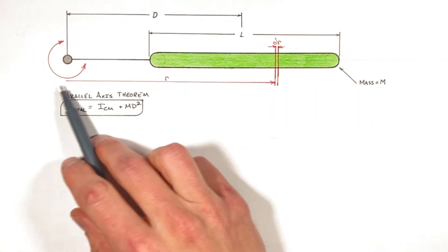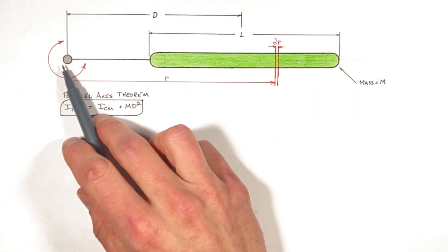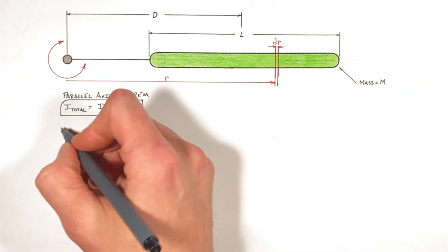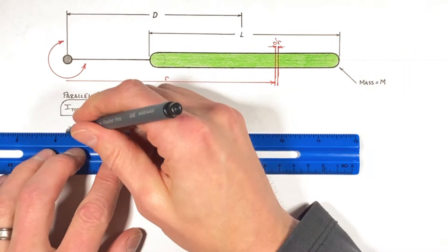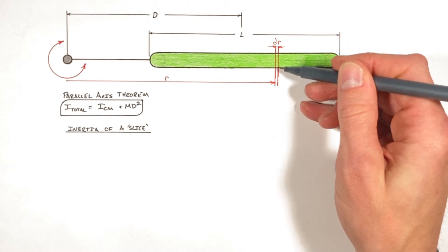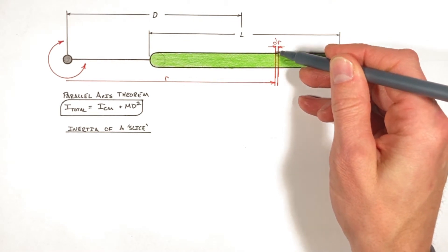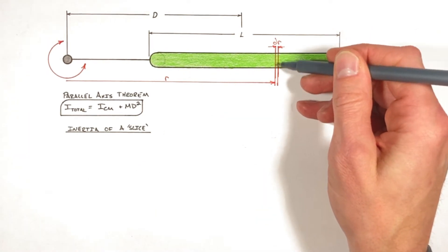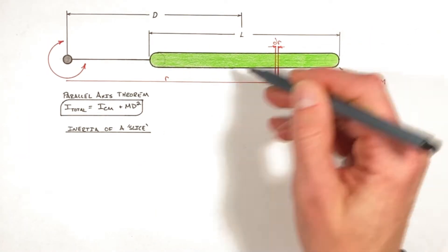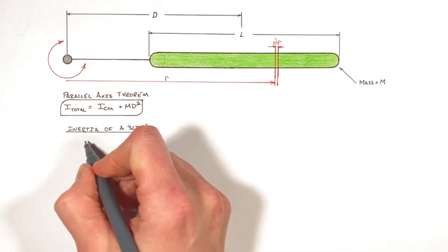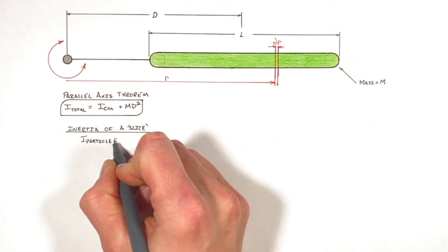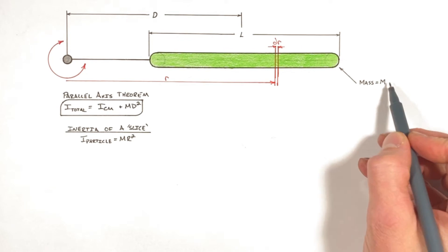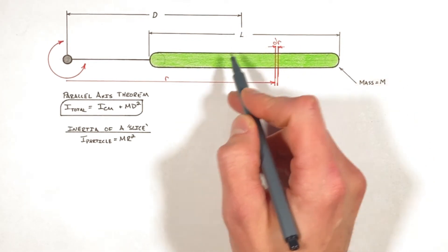In order to find the inertia of this rod rotating around this point outside of the rod, we're going to first look at the inertia of just this slice. We have to look at just a slice because we can only consider mass at a single radius, and we're going to treat all the mass in this slice as though it's a particle. The inertia of a particle is given by mr².